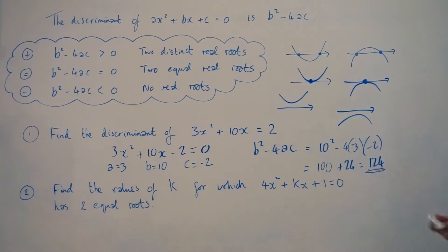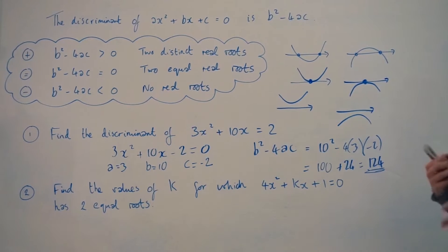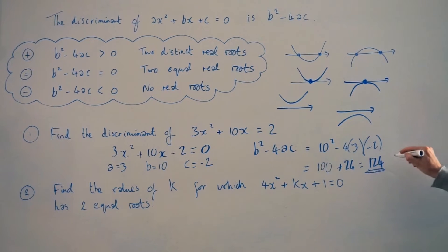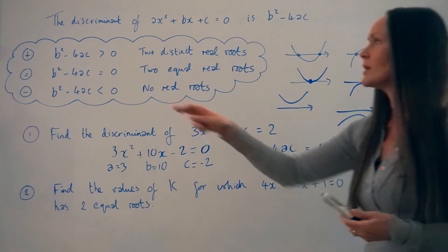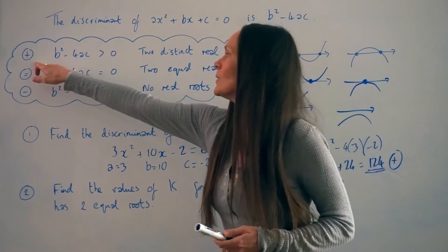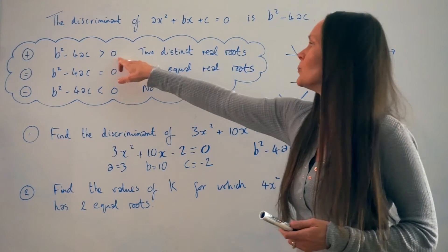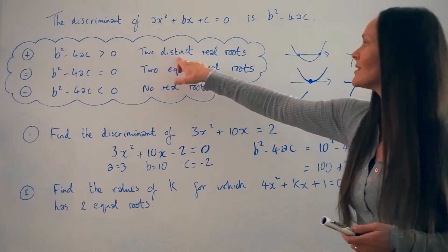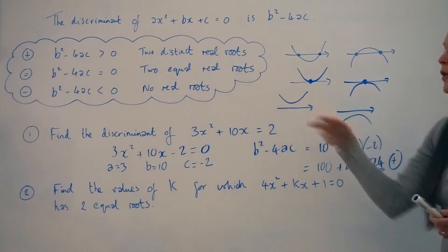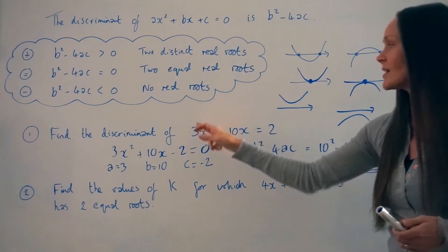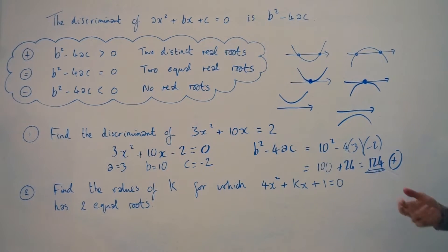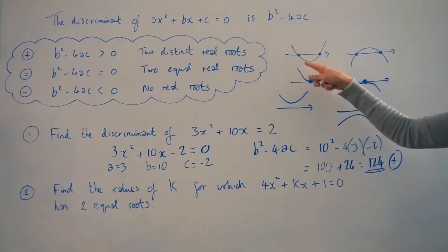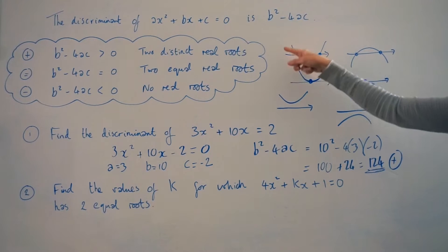So 124 is the discriminant. This is a positive number — greater than zero — so it means there would be two distinct real roots. You would expect this quadratic to have two distinct real solutions, and on a sketch it would look something like this.